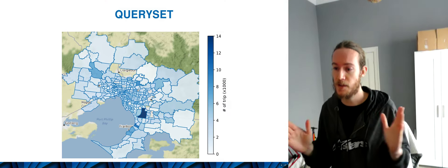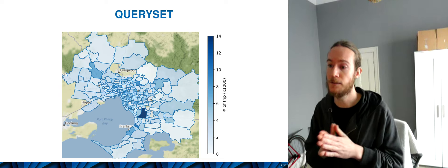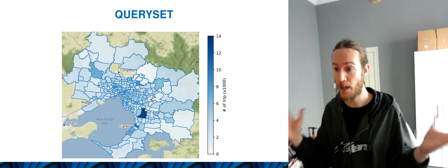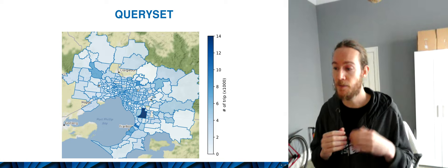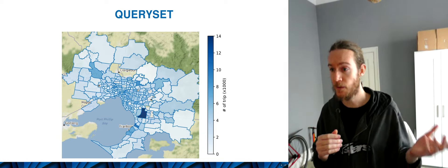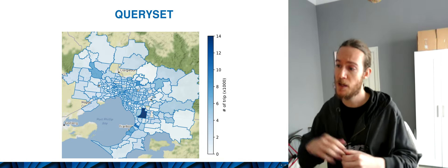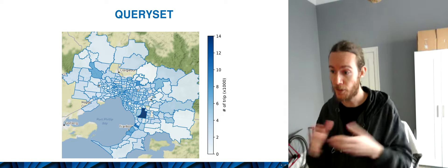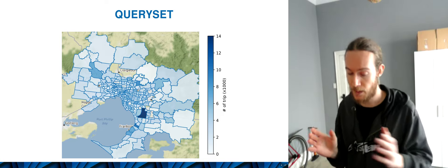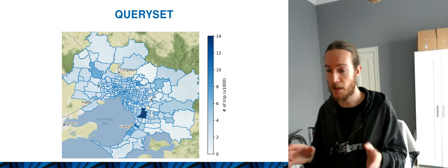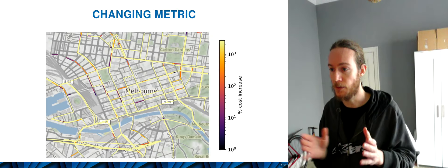This is a visualization of our query set — a map of the greater Melbourne area where colors vary from light or no color, where we have either no requests or very few requests, to fairly dark where we have a lot of demand. These are commuter trips. It's data that's available freely online.